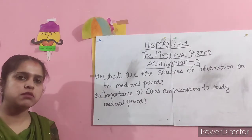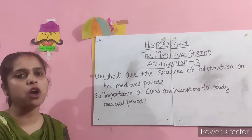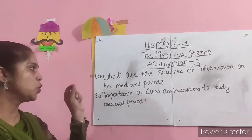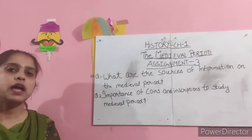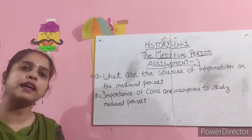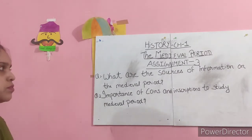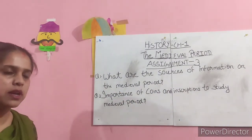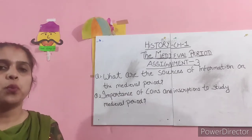We have studied the archaeological sources. Now I am giving you a short assignment — write it in your classwork copy as assignment 3. Question number 1: What are the sources of information on the medieval period? In your answer, write the two sources of information — archaeological and literary — and give examples of those sources.